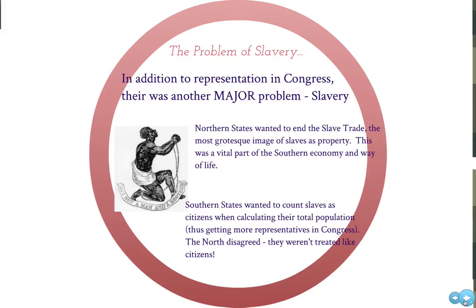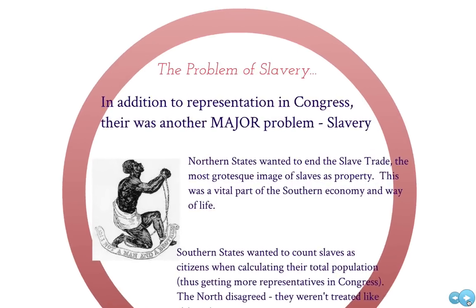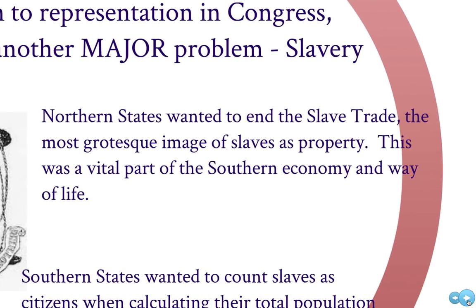Now let's move on to the issue of slavery. In addition to representation in Congress, slavery was the other major problem. Northern states wanted to end the slave trade — they found it grotesque, with people being brought over on slave ships and sold as property. This was a serious moral issue. However, the slave trade was a vital part of the southern economy. Southern people depended on the importation of slaves to add to their plantations, and there were also slave traders whose livelihood depended on it.